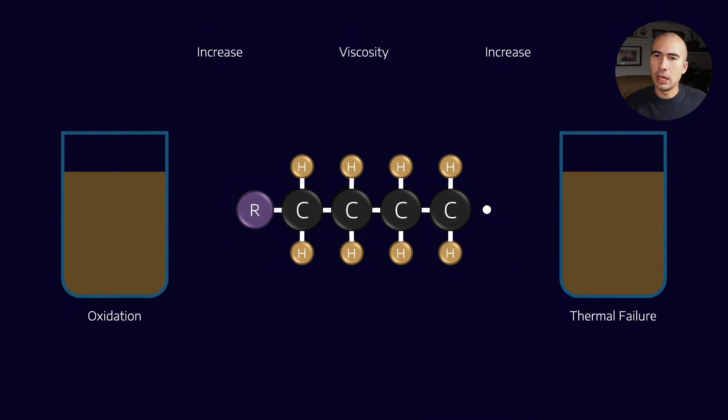Now on top of that, long chain polymers contribute as well to sludge and varnish. So we could expect that the sludge and the varnish in both cases will increase. Now the nature of the sludge or varnish changes a little bit. In thermal failure you generally expect to see that hot baked-on varnish that's very difficult to remove unless you physically scrub it off. Whereas oxidation tends to promote more soft varnish contaminants. But it's on a case-by-case basis.